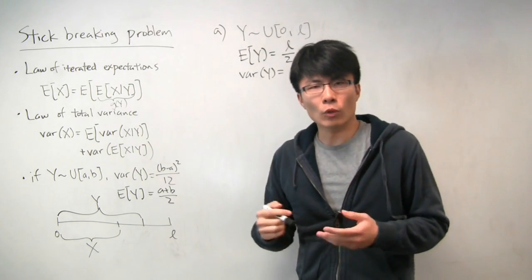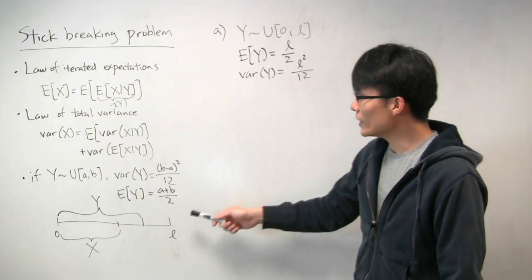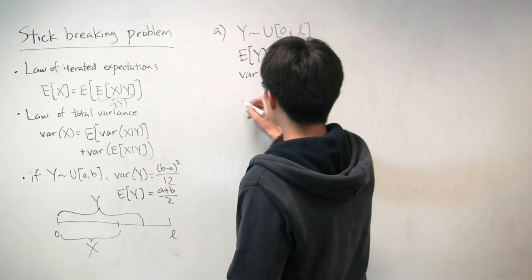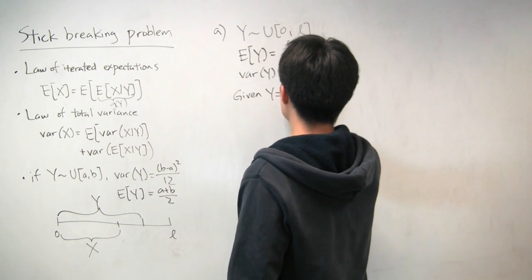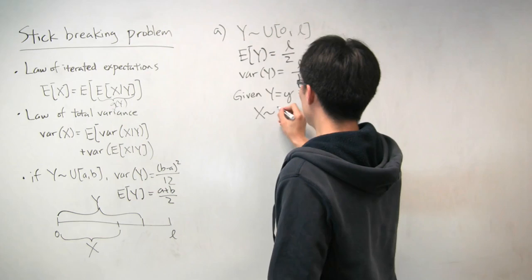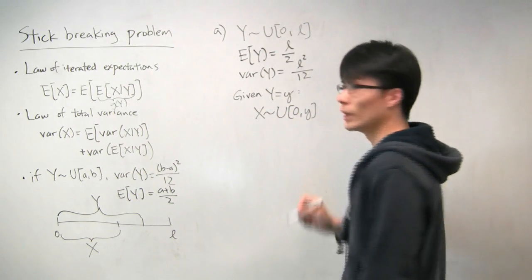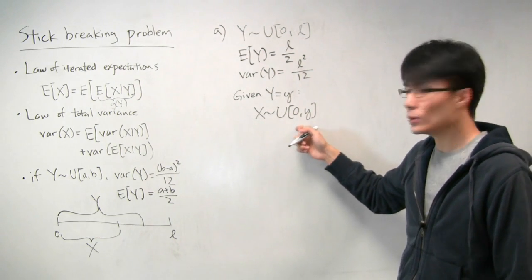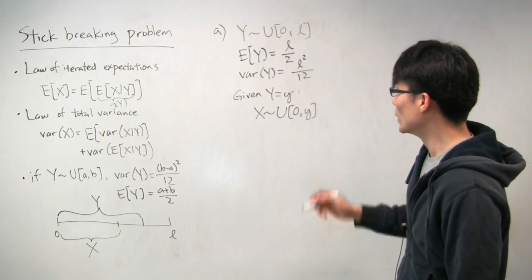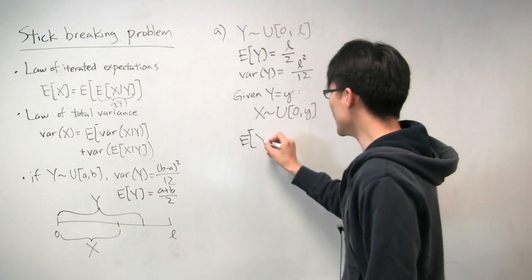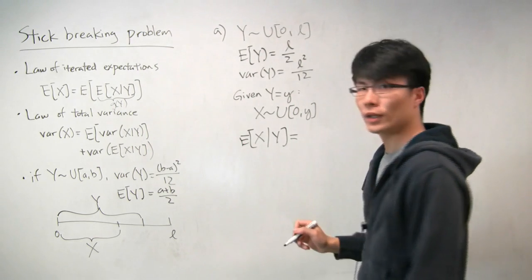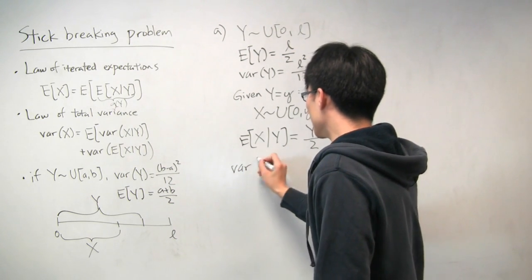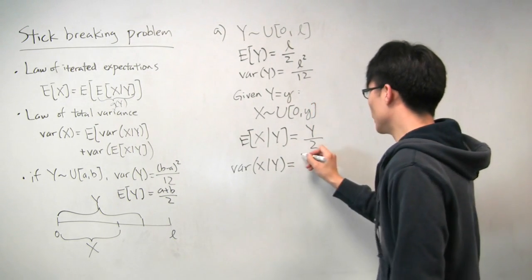What we do instead is make the observation that if we actually knew what y was, calculating the expectation of x would be simple. If we were given that y equals some little y, then x would just be uniformly distributed between 0 and little y. In that case, the expectation of x given y would just be y over 2, and the variance of x given y would just be y squared over 12.